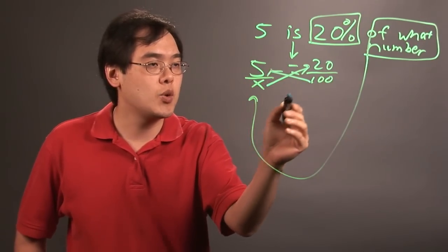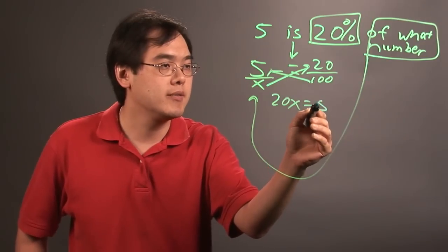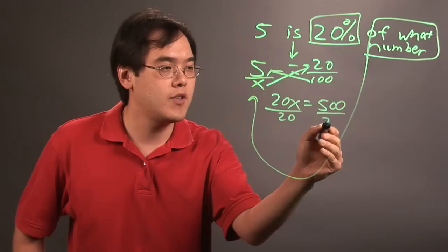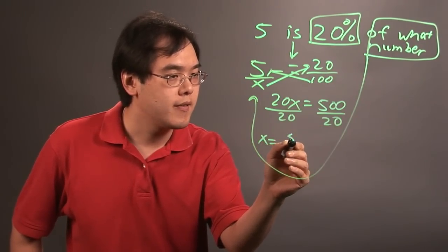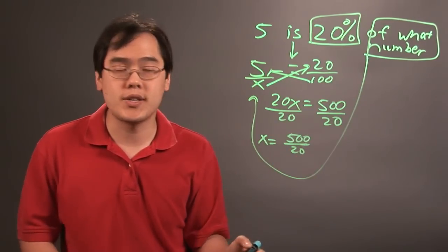So, x times 20 is going to give you 20x, and then 100 times 5 is going to be 500. And then you want to divide both sides by 20 to solve for x. So you have x is equal to 500 over 20, and here what you want to think about is reduce when necessary.